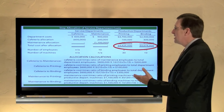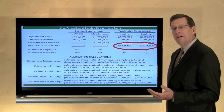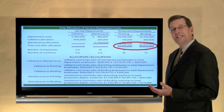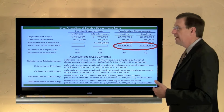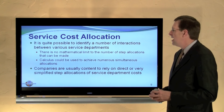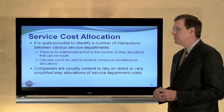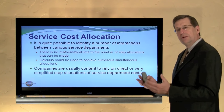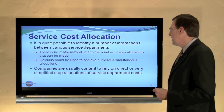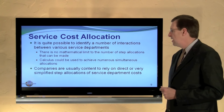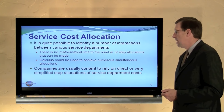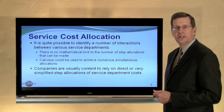Now, one thing the Step method fails to consider is that some of the maintenance employees may be providing services to the cafeteria — that is, some of the maintenance costs may be absorbed by the cafeteria. We can get into a simultaneous allocation situation. It is quite possible to identify a number of interactions between various service departments, and there's no mathematical limit to the number of Step allocations that could be made. We could use calculus to achieve numerous simultaneous allocations. However, companies are usually content to rely on a direct or very simplified Step allocation process such as what I've just shown and illustrated.